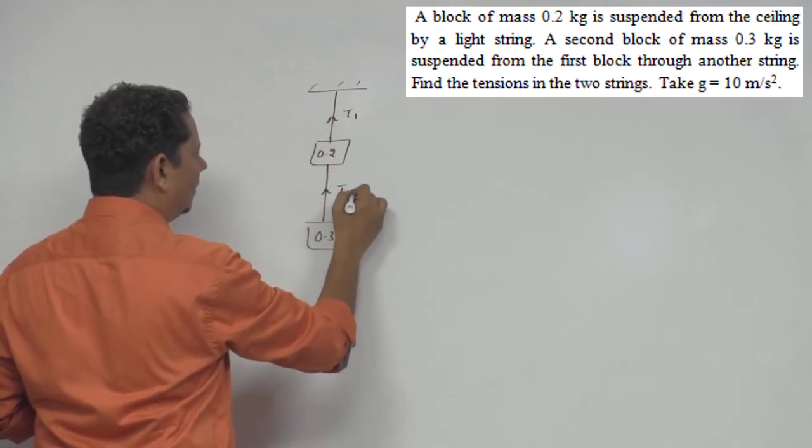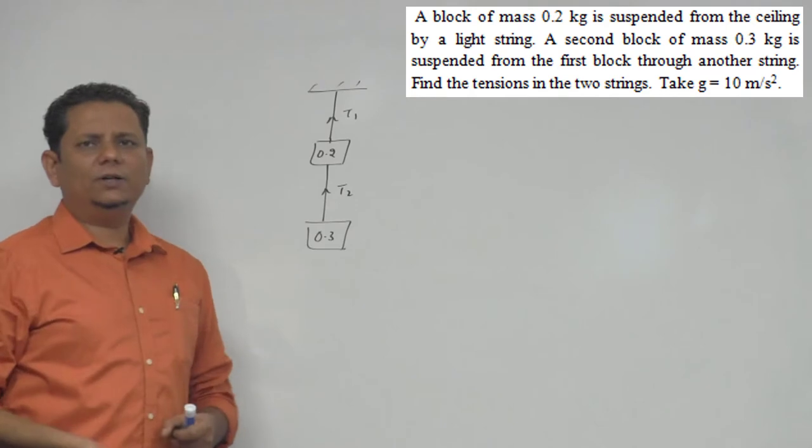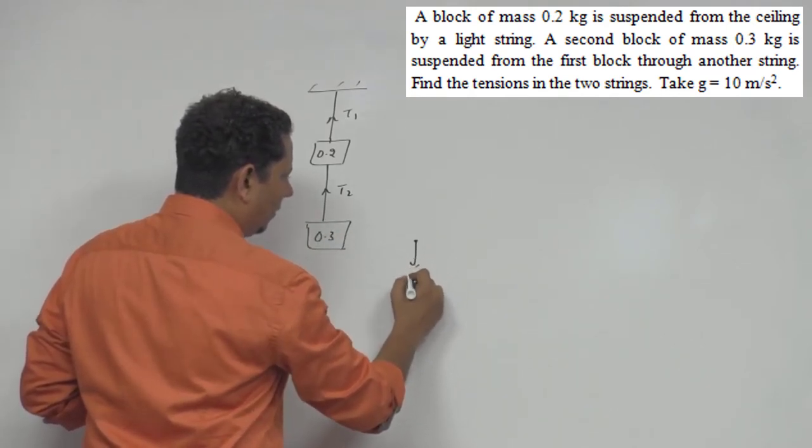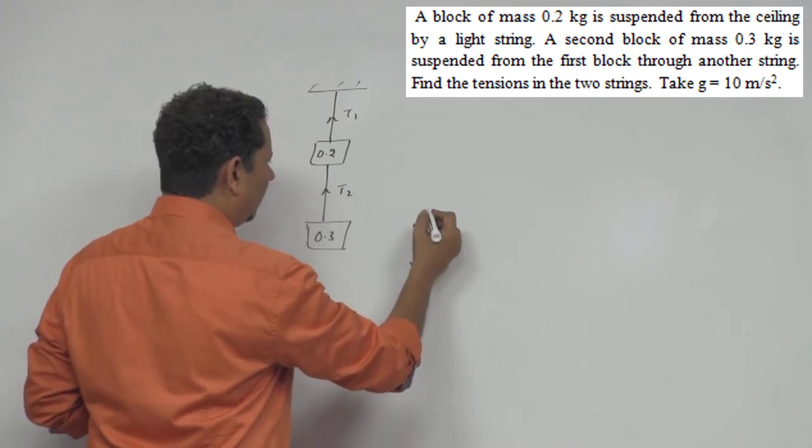Let's call this tension T1 or let's call this T2. हमें T1, T2 की value बतानी है. Now, simple सवाल है. अगर आप इसका FBD बनाएंगे, so नीचे तो आपका force लग रहा है Mg और उपर force लगेगा T2.